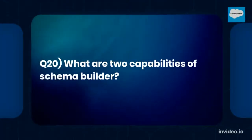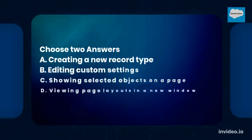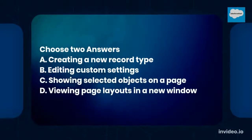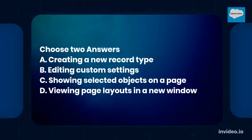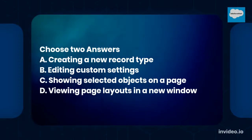Question number 20: What are two capabilities of schema builder? Choose two answers. A. Creating a new record type. B. Editing custom settings. C. Showing selected objects on a page. D. Viewing page layouts in a new window.